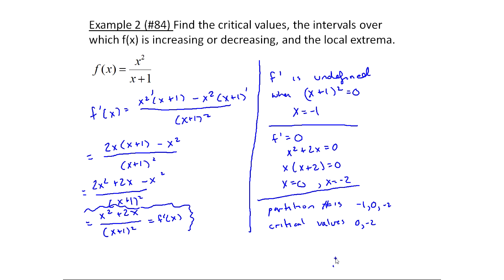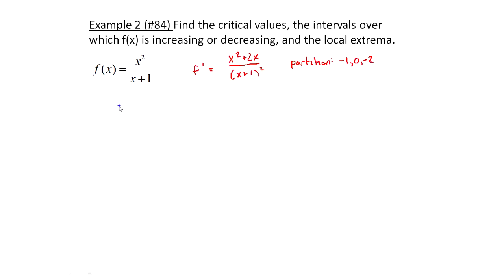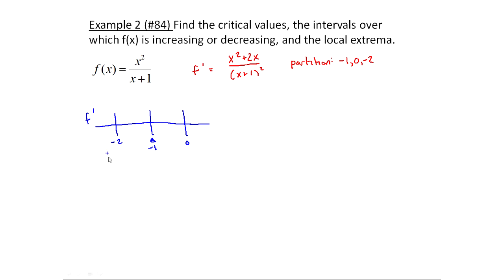Now I need to figure out the signs over the different intervals using f prime to determine where f is increasing or decreasing, and then identify any local extrema. I'll partition a number line with minus two, minus one, and zero. I need test values in each interval, so I'll start with something more negative than minus two — x equals minus three.